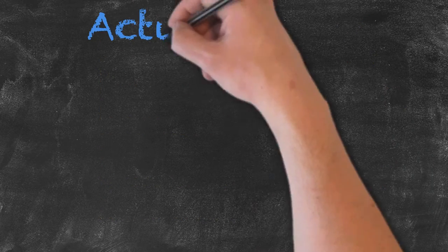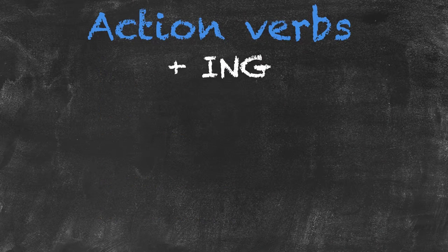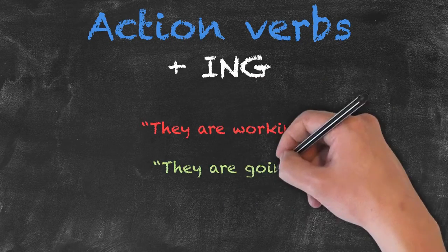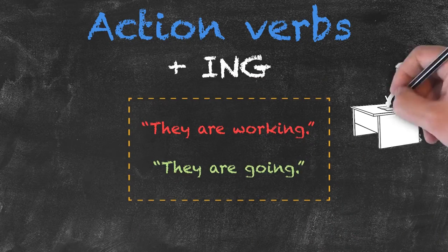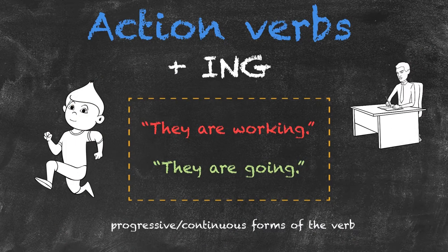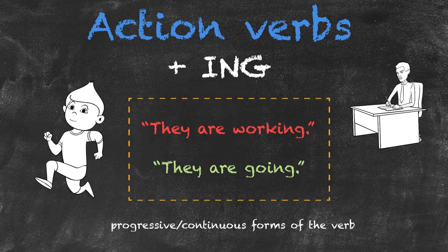However, these action verbs do often take the ing form. We could easily say they are working or they are going. These are the progressive or continuous forms of the verb. We'll get into that when we talk about our various tenses.